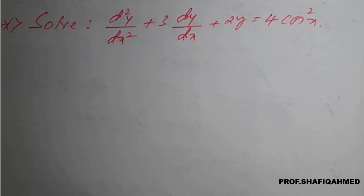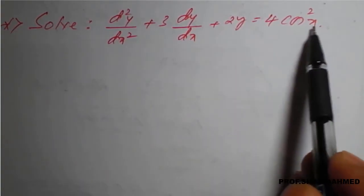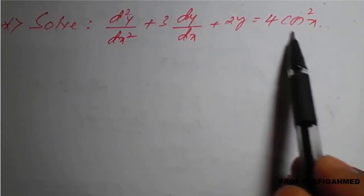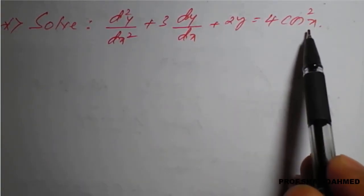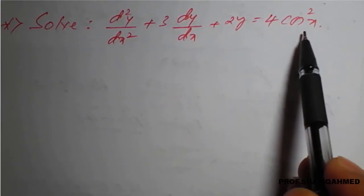Hello everyone. In this lecture, we will see a problem on non-homogeneous differential equation of type 2. Why type 2? Because on the right-hand side, we are getting a function of cosine.